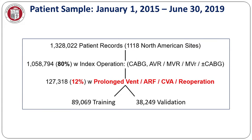This set the stage for the development of failure to rescue as a quality metric in cardiac surgery. Based on this pioneering work, we examined the records of over a million patients from a three-and-a-half-year period. In accordance with the established STS risk models, we chose the 80% of patients with CABG, aortic valve replacement, mitral valve repair or replacement, or CABG associated with each of these valvular operations. Of these, 12% had suffered any of four complications for which the STS has established risk models, leaving us with 127,318 patients who were divided into training and validation models.